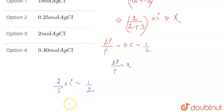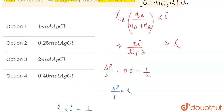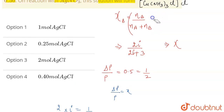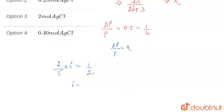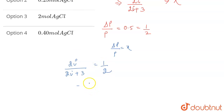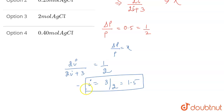There is a correction: the Van't Hoff factor i is only multiplied with the number of moles of solute, not with the number of moles of solvent, because only the solute dissociates. So the correct expression is 2i divided by (2i + 3) = 1/2. Solving this, we get i = 3/2, which equals 1.5. This is the Van't Hoff factor.